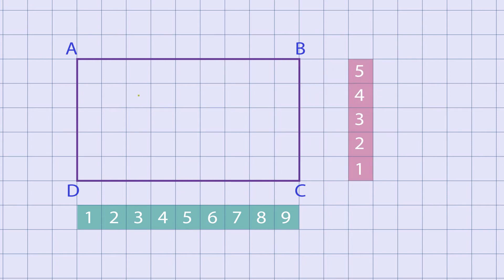Now, if the side length of the small square of the grid is 1 cm, then we can say the length of the rectangle equals 9 into 1 cm, equals 9 cm. And the width of the rectangle equals 5 into 1 cm, equals 5 cm.